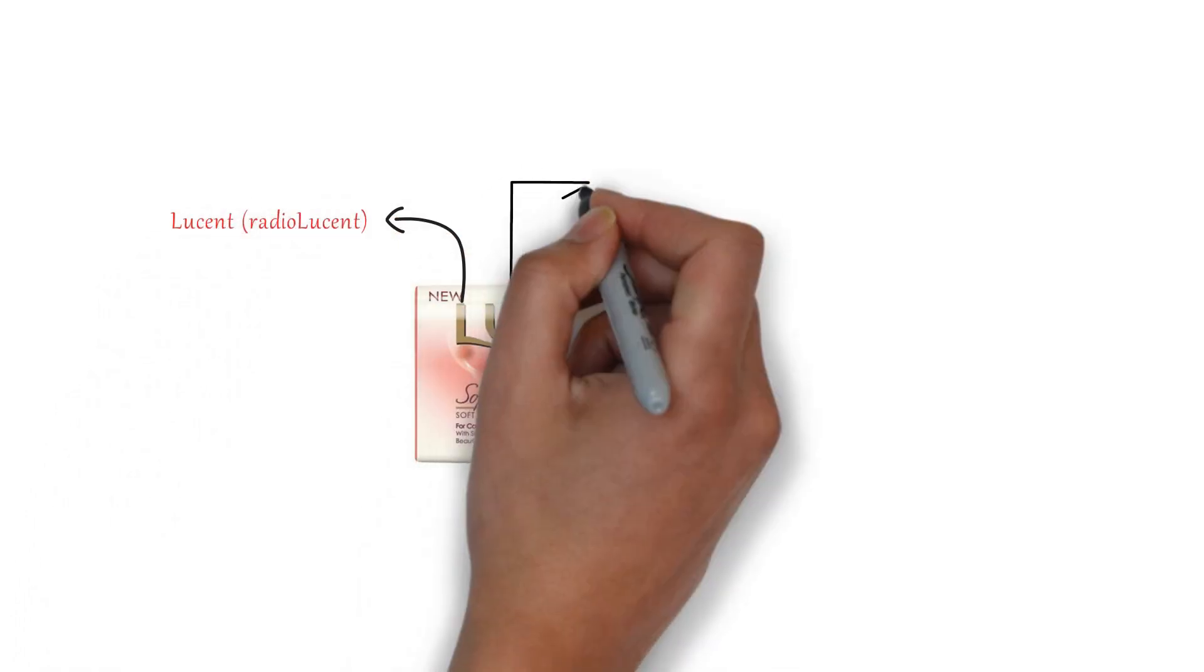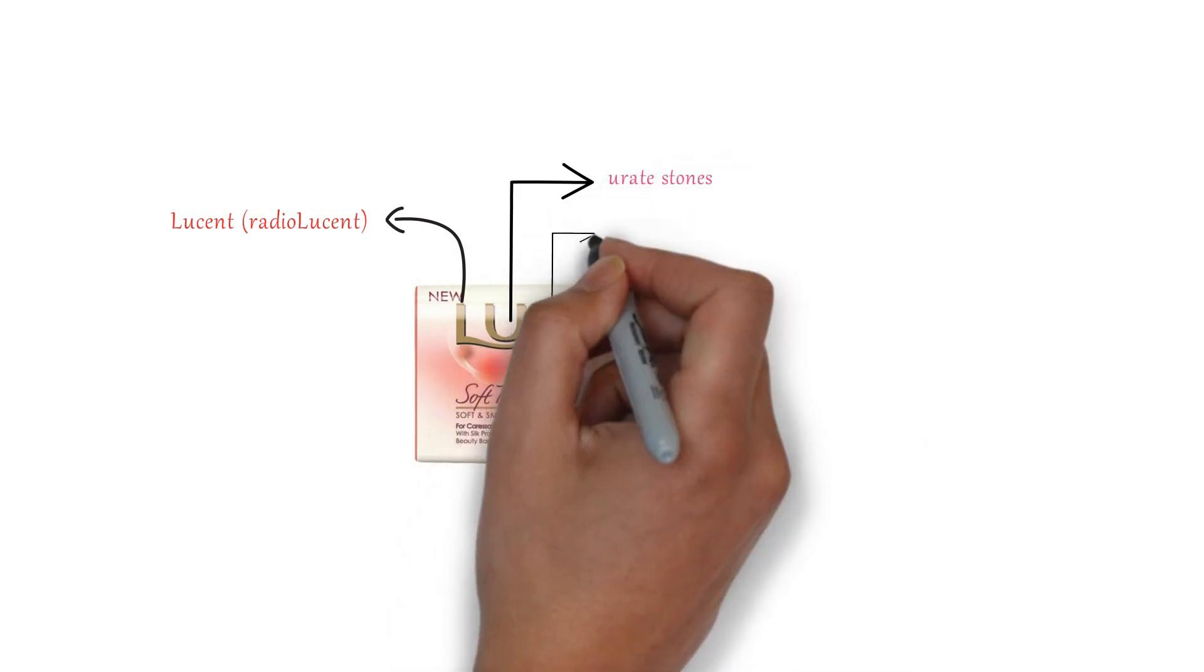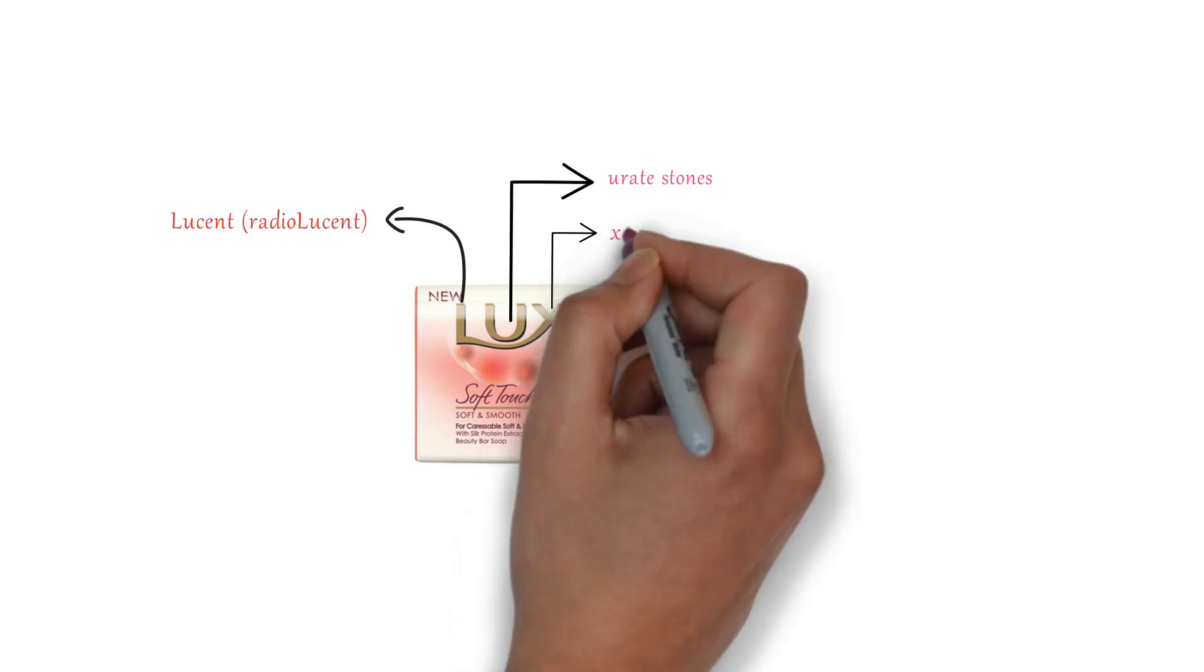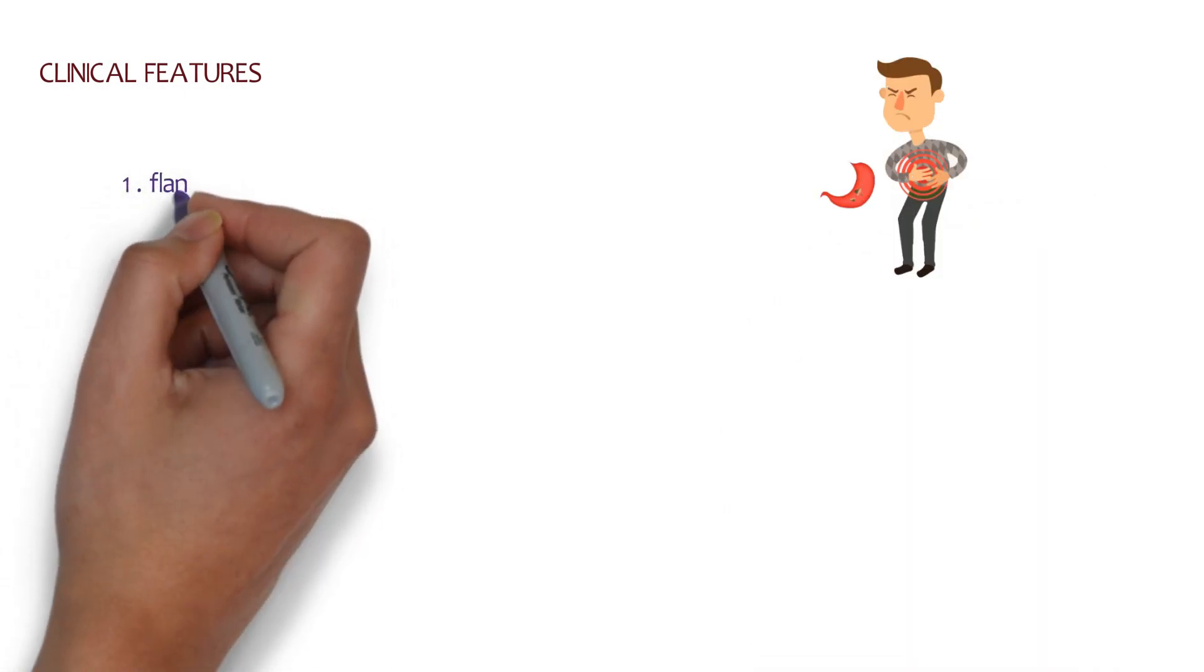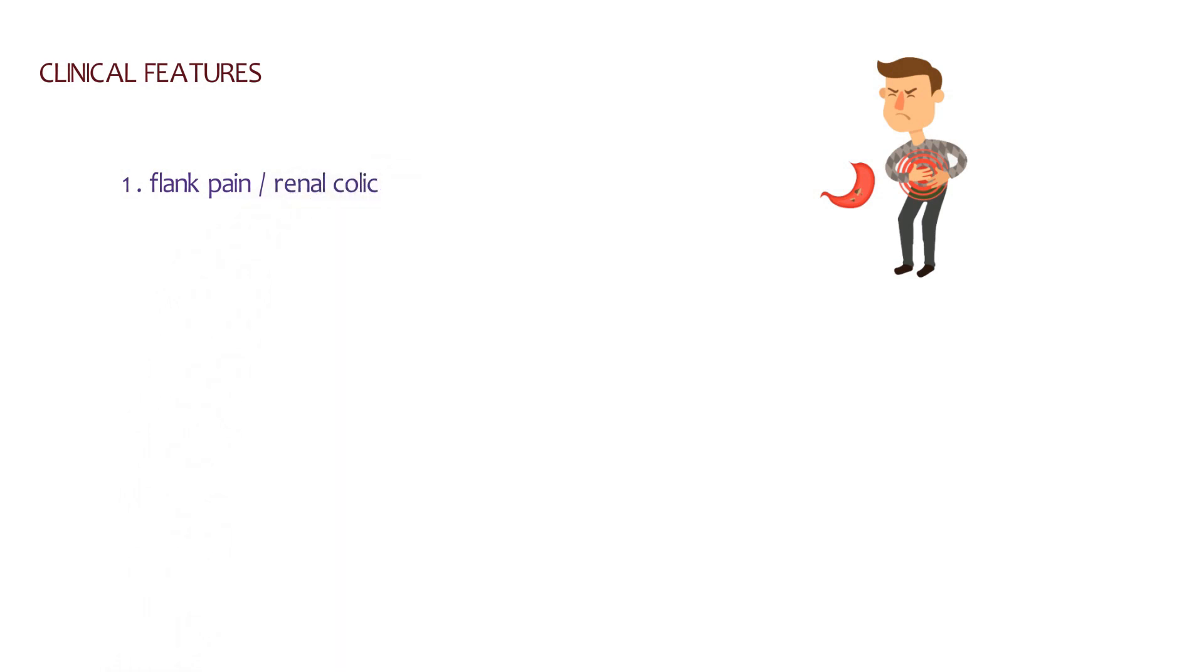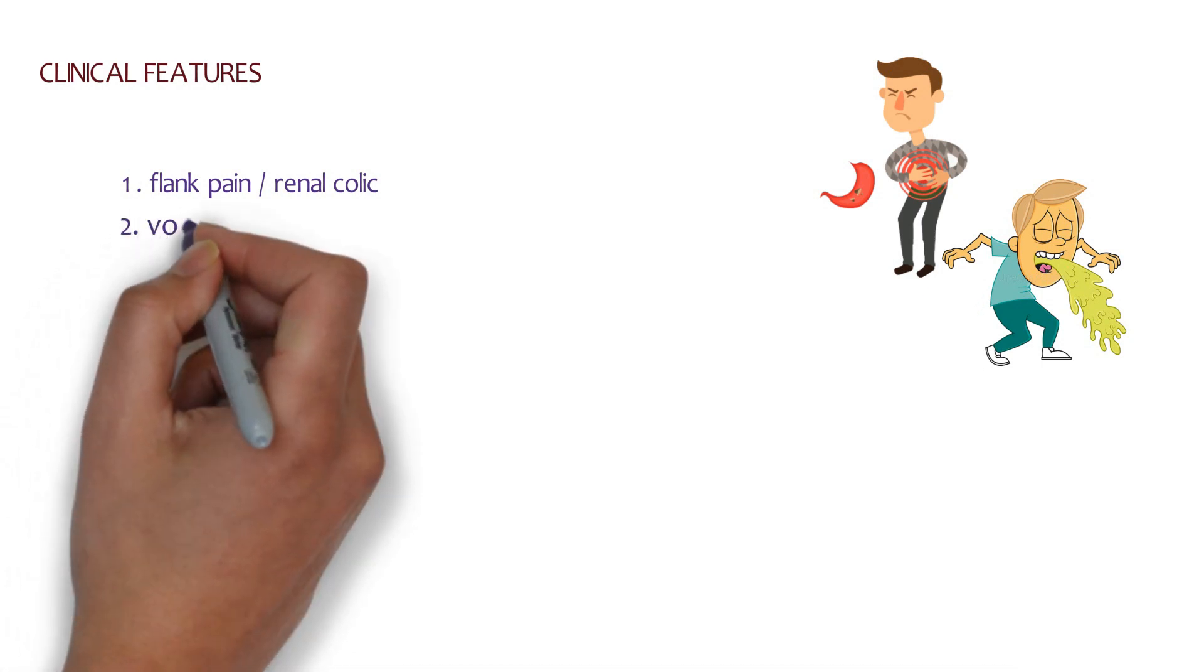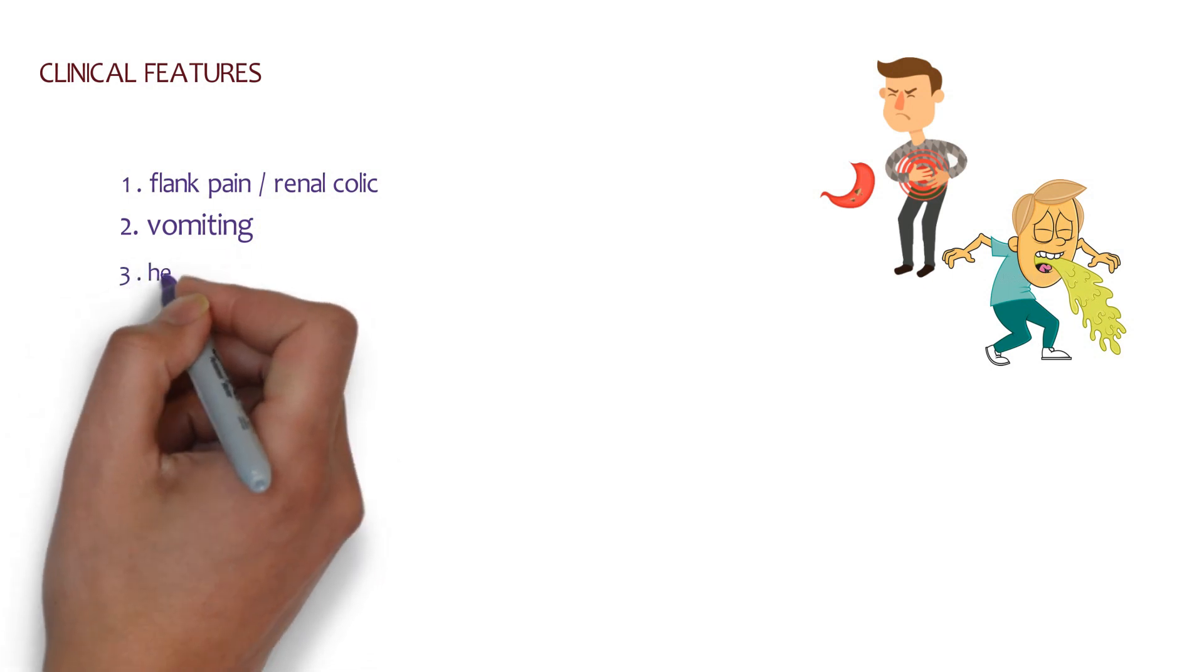Now we are going to look at the clinical features: flank pain, renal colic. This flank pain can radiate to the umbilicus; in males it can radiate to the tip of the penis, or in females it can radiate to the vulva. There might be vomiting due to renal-gastric reflex and hematuria. These three are very significant clinical features in this condition.